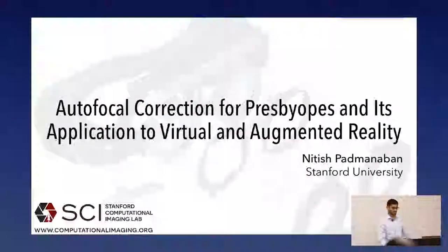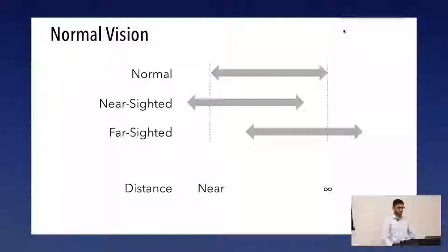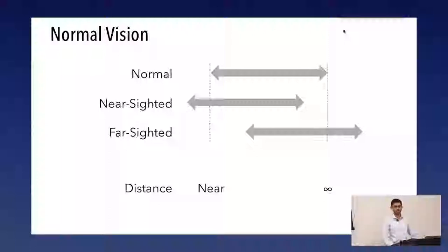Before I get into the actual details of both of those things, I'm going to describe vision because we need to define what normal vision is before we describe how visually impaired things work. When I say normal vision, I'm really talking about emetropic vision for people that are younger. Your eyes are able to refocus through a relatively large range of distances, from optical infinity to somewhere very close — let's say 10 to 25 centimeters or so, depending on your age.